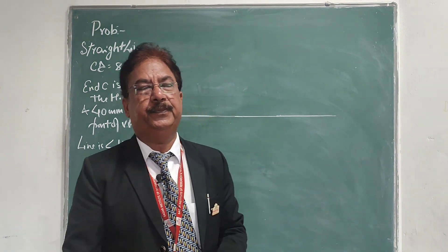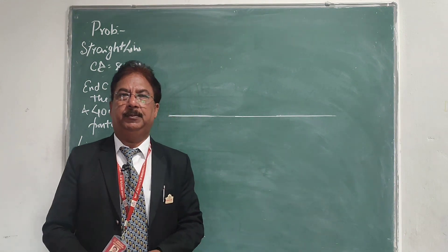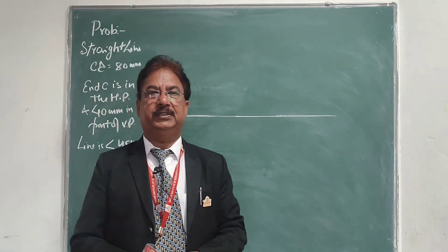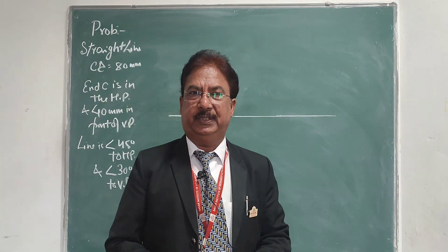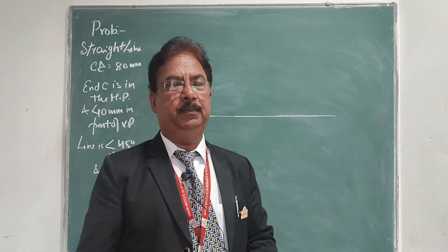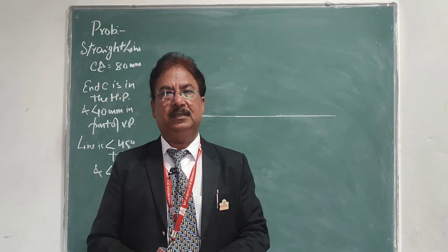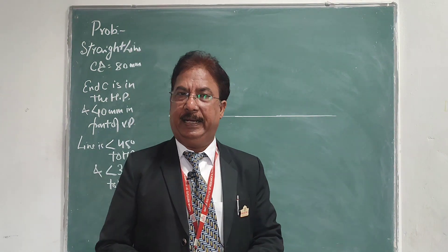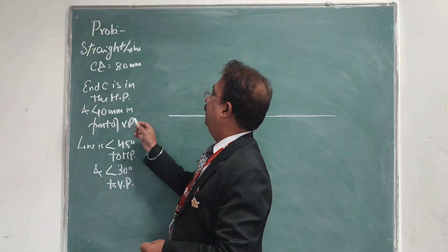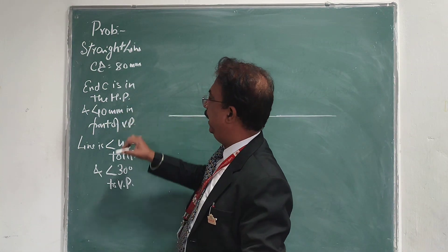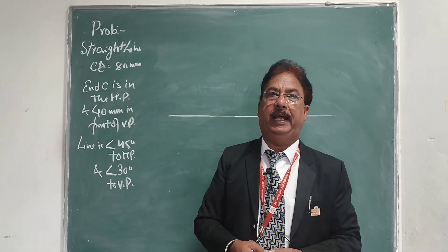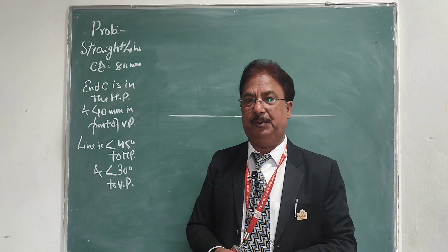Welcome students. Here I am with another problem on engineering graphics. This time the problem will be on projection of a straight line inclined to both planes. We discussed concepts of a line inclined to both planes earlier. Today I am taking one simple problem: draw the projection of a line CD, 80 mm long. Point C will be on the HP and 40 mm in front of the VP. The line will be inclined 45 degrees to the HP and 30 degrees to the VP.